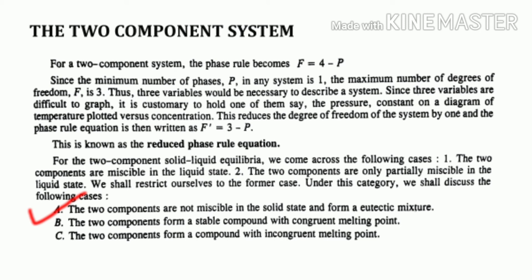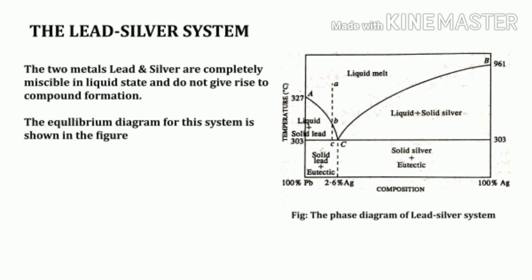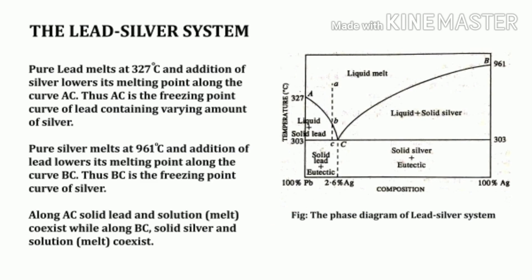Today we discuss case (a): simple eutectic systems, where two components are not miscible in the solid state and form a eutectic mixture. As an example, we take the lead-silver system. Lead and silver are two metals completely miscible in the liquid state and do not give rise to any compound formation. The equilibrium diagram is represented by the figure shown here.